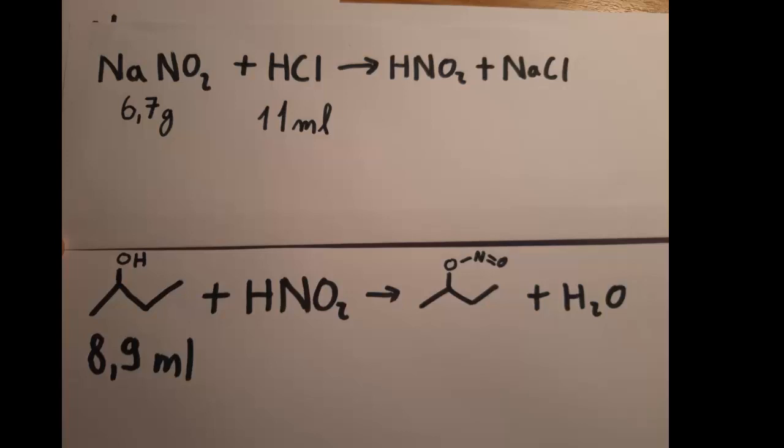Hello guys, today we'll be synthesizing 2-butyl nitride by addition of nitrous acid to 2-butanol. We'll be working on a 0.1 molar scale, so we need 6.7 grams of sodium nitride, 11 milliliters of 30% hydrochloric acid, and 8.9 milliliters of 2-butanol.